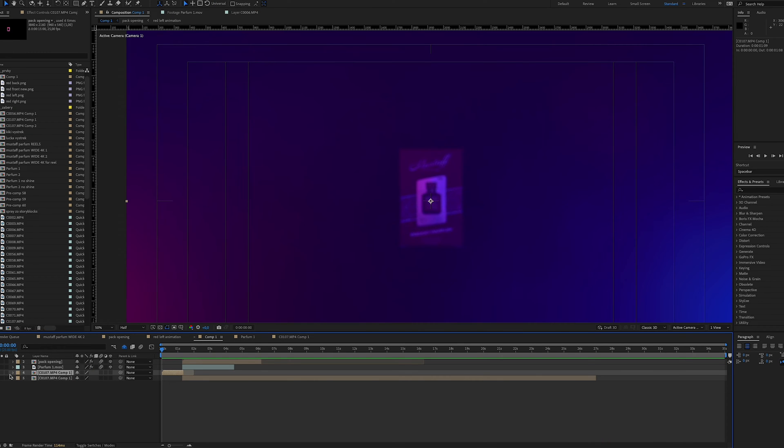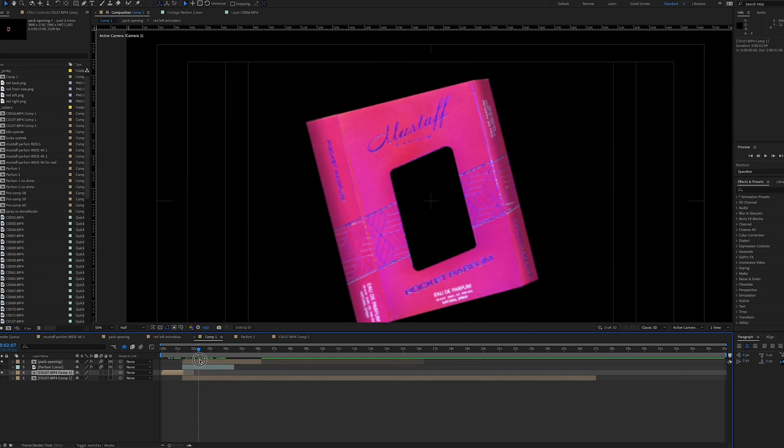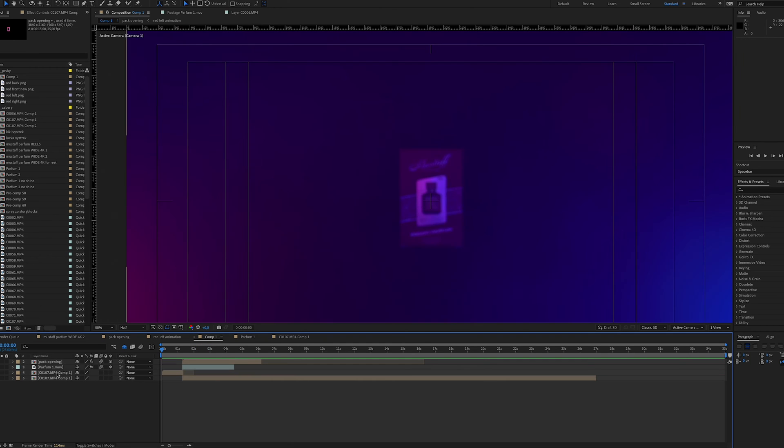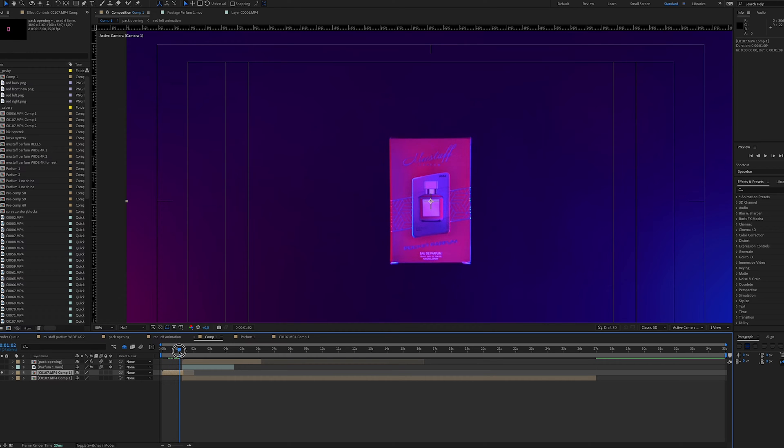Now I can create my main composition where I import all the clips. The first clip where the pusher is pushing the perfume, the second clip which is the packaging and the third clip which is the rotating perfume. On the first clip I just stop the clip where I want to start the animation of the packaging flying off.